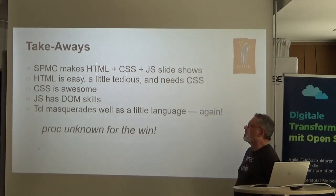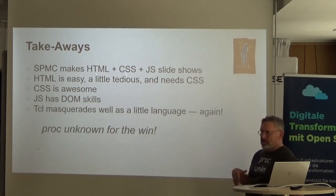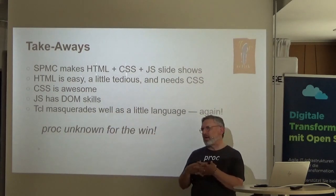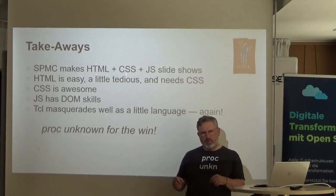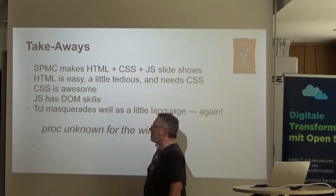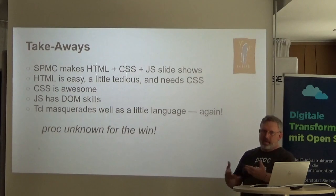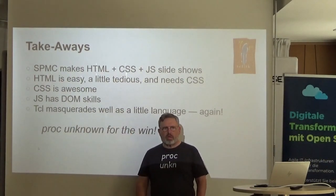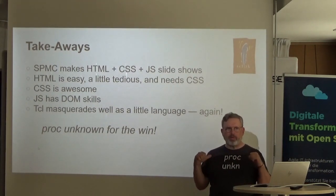Some takeaways: it's a nice way to make these stand-alone presentations in HTML technology with cascading style sheets and JavaScript. HTML is easy and a little tedious, but it needs the CSS to have beautiful pages. CSS, I found, is pretty awesome — it has a lot of features. It does a really good job of matching exactly the elements you want to highlight in a particular way, and distinguishing them from other ones. JavaScript has DOM skills — it's really unfortunate we didn't get there first, because I don't see why the animation couldn't be done with Tickle. The only thing JavaScript offered — the reason it became a killer app — was that it understood the DOM. And once again, Tickle masquerades well as a little language. Proc unknown — it's my hammer, my tool for everything now.